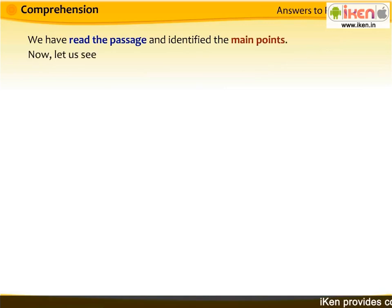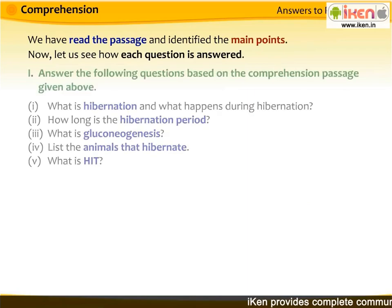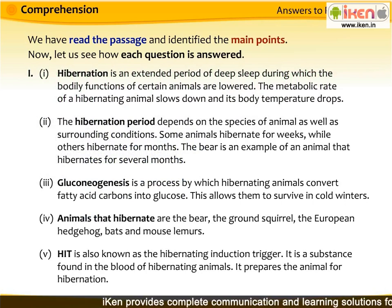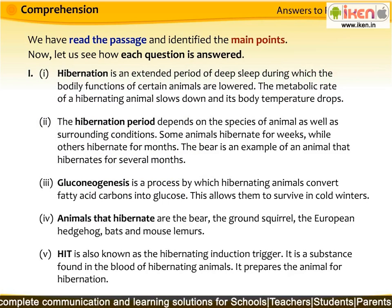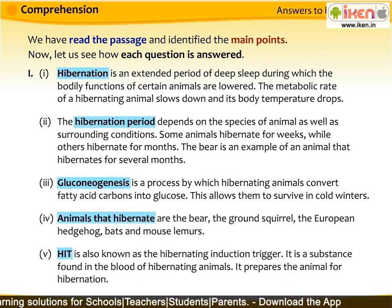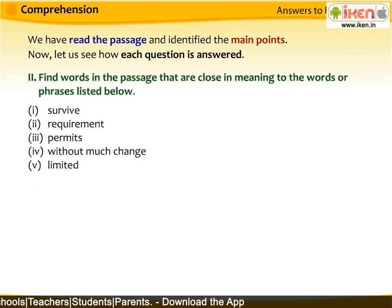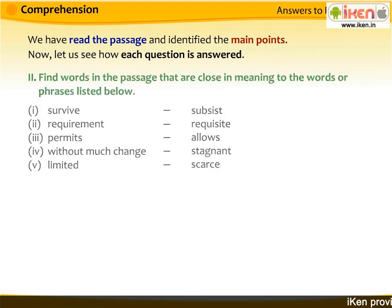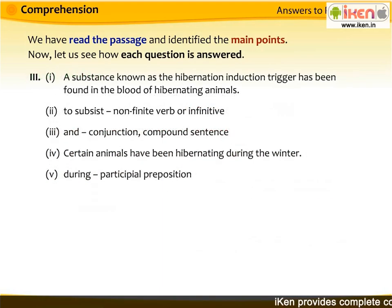We have read the passage and identified the main points. Now let us see how each question is answered. The answers to the first set of questions can be found in different parts of the passage. These answers can be found by locating keywords given in the questions. It is acceptable to repeat keywords from the questions in the answers. One must locate words in the passage according to the definitions or meanings given in the questions. The last set of questions tests one's grammar.